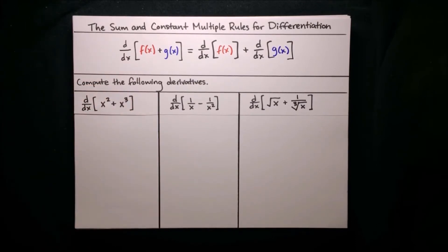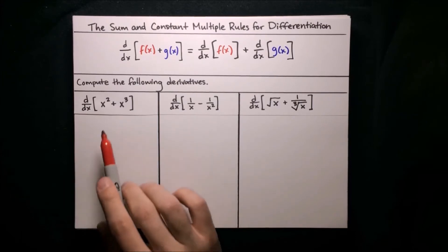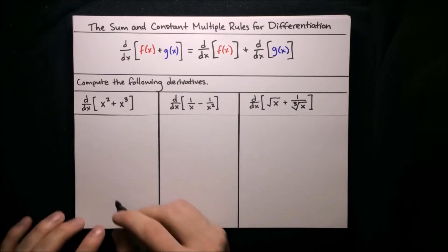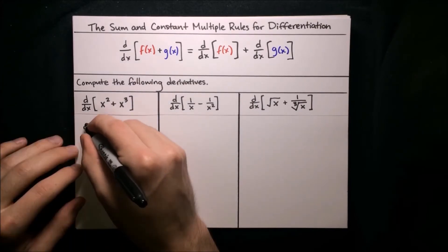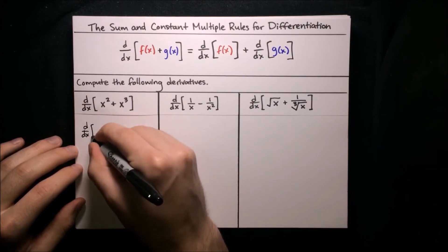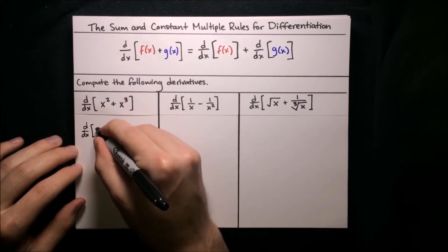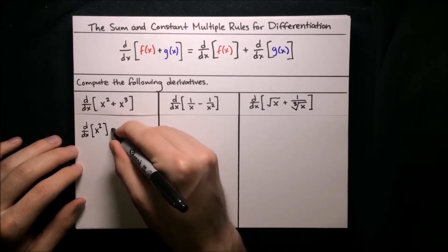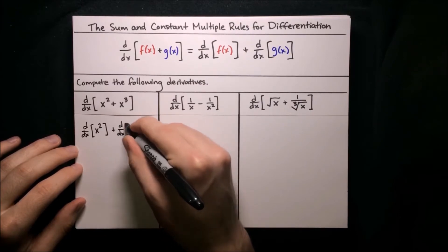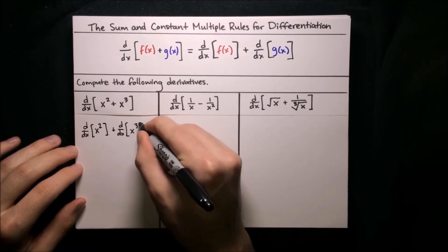Let's go ahead and practice this on some examples. We want to compute the following derivatives — first, the derivative of x squared plus x cubed. Using the sum rule, we know that we can just split up this derivative: the derivative of the first term, x squared, plus the derivative of the second term, x cubed.